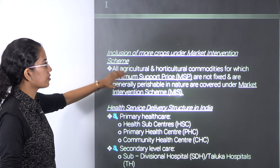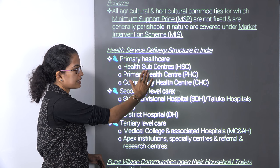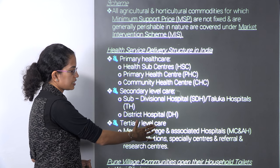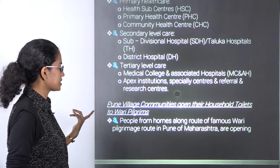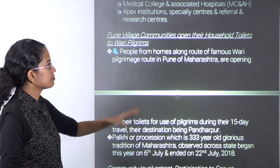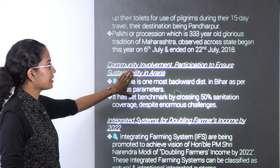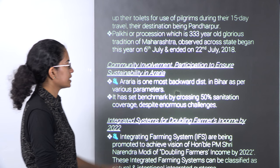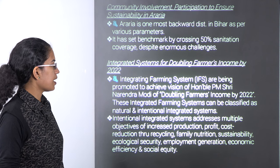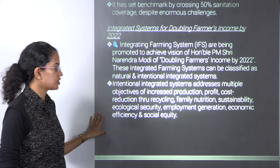There are schemes for minimum support price and market intervention. Primary healthcare is divided under three heads: primary sub-centers, PHCs, and CHCs. Secondary level care talks about sub-divisional hospitals and district hospitals. Tertiary level includes medical colleges and apex specialty institutions. There is also an integrated system for doubling the farmer's income, addressing various issues like production, profit, cost reduction through recycling, family nutrition, sustainability, ecological security, and social equity.